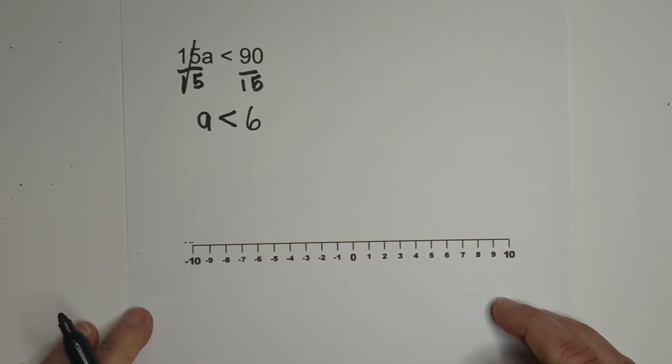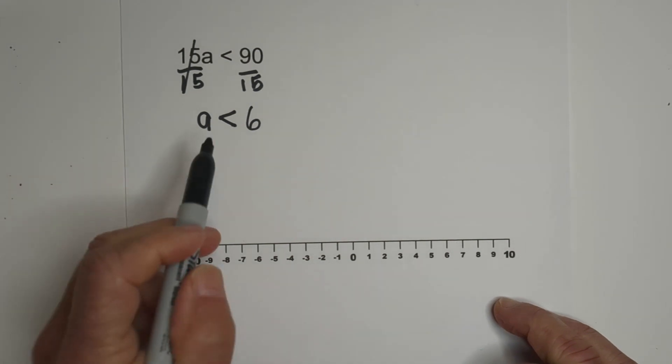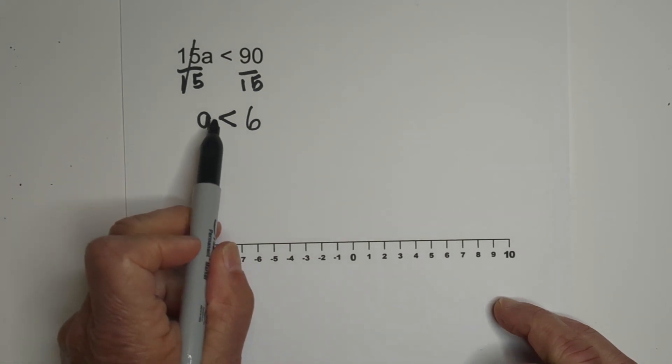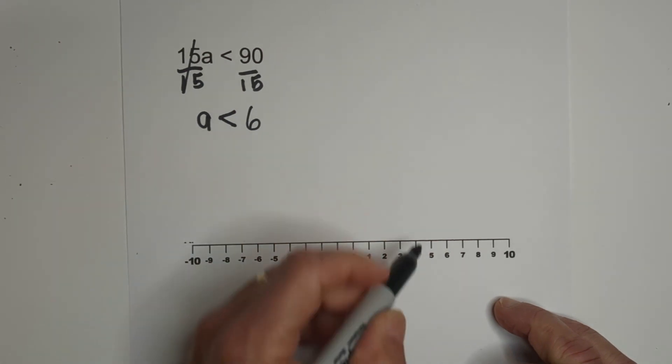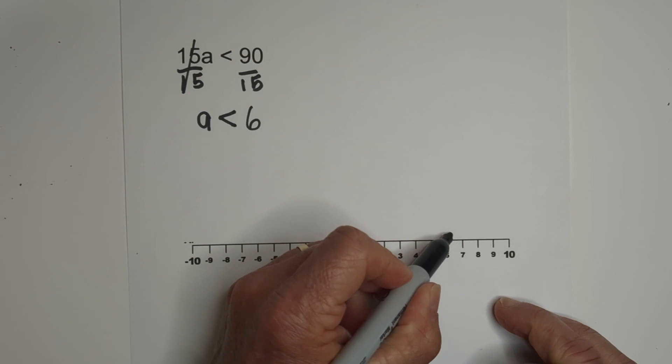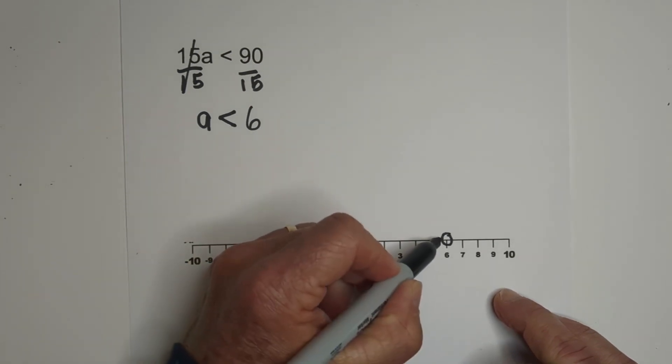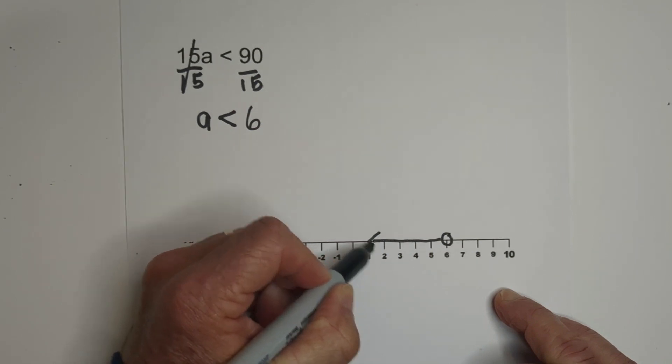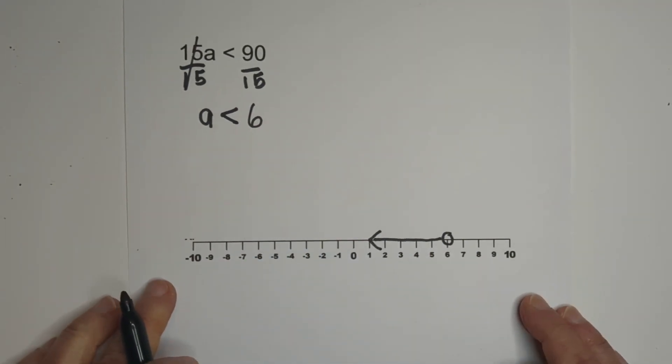Now let's graph it. We know that since it is less than, let's find 6. It's less than, and it needs to be open because it is not less than or equal to, so it will be less than 6. So it will look like that on the number line.